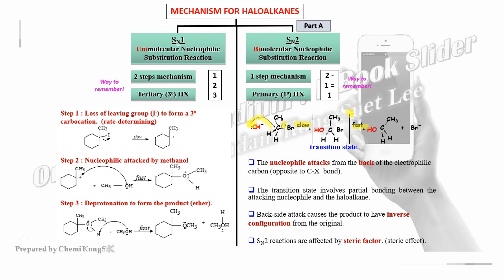For SN1: step one is carbocation formation — bond breaking, loss of bromide (the leaving group) — forming a tertiary carbocation. This is the slow step. You must label it as 'tertiary carbocation.' Step two: nucleophilic attack. When methanol (weak nucleophile) attacks, it attaches from oxygen to the carbocation — this is a fast step. The oxygen forms three bonds, giving a positive charge on oxygen, followed by deprotonation to form the ether product (C-O-C).